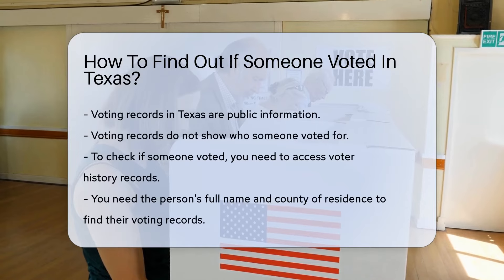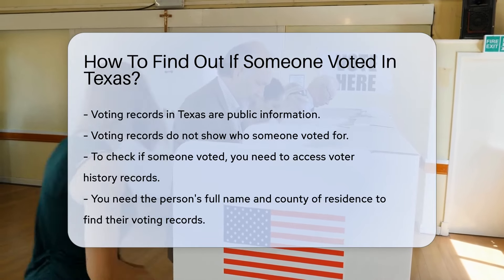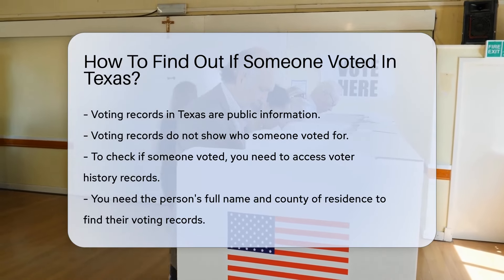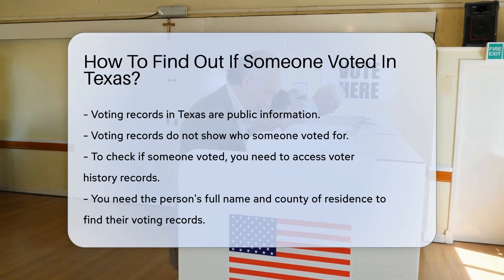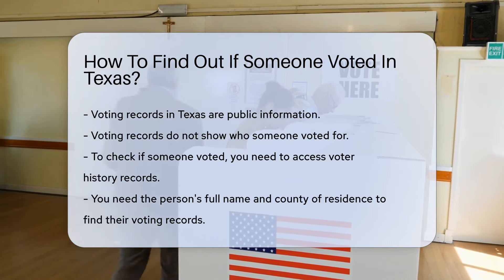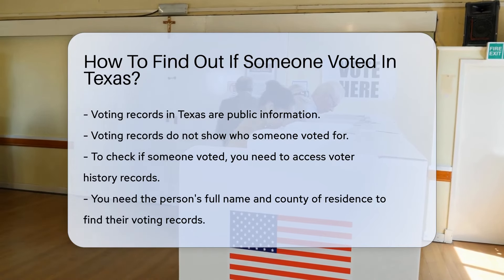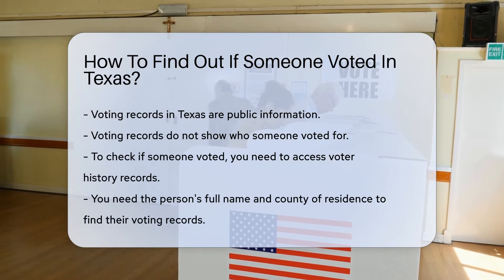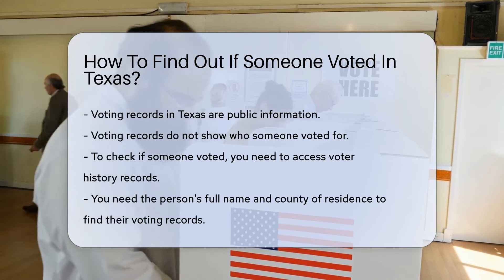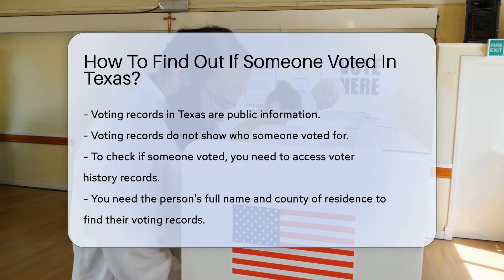However, they do not show who someone voted for. To find out if someone voted, you need to check the voter history records. First, you need to know the person's full name and county of residence. This is because Texas voting records are maintained at the county level.